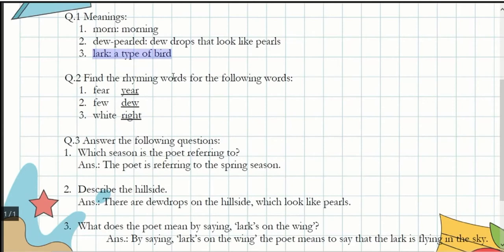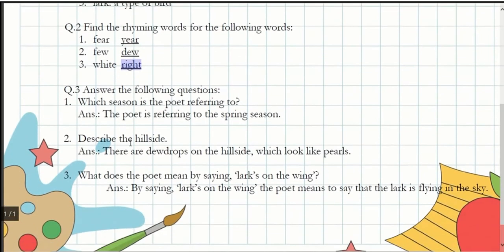Next question: find the rhyming words for the following words. What do you mean by rhyming words? If I explain in Hindi, rhyming words means, for example, long-song. Another example would be good-would. Same way: fear-year, few-dew, white-right.